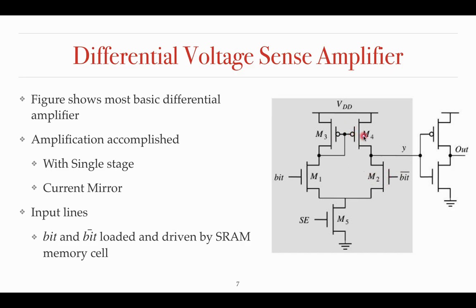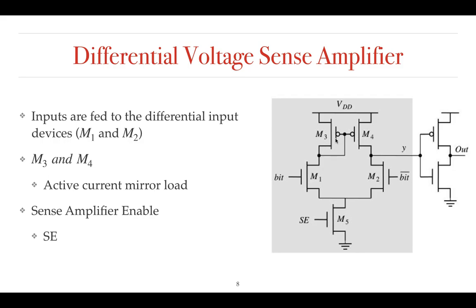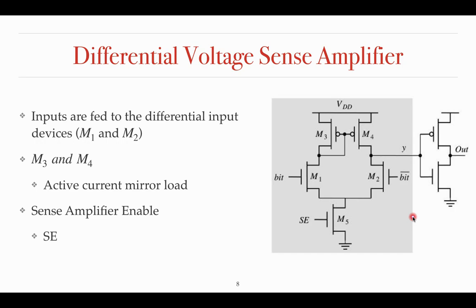M3 and M4 are the current mirror structure, where M1 and M2 are the differential input devices. M5 is another NMOS transistor used to enable the sense amplifier, where SE stands for sense amplifier enable. If SE is high, M5 will be ON and the sense amplifier will be enabled. The output of the sense amplifier is given to another inverter, and the main output of the sense amplifier is the output of this inverter. This is a simple one-stage differential voltage sense amplifier used to sense the bit as well as bit bar line of the SRAM cell.